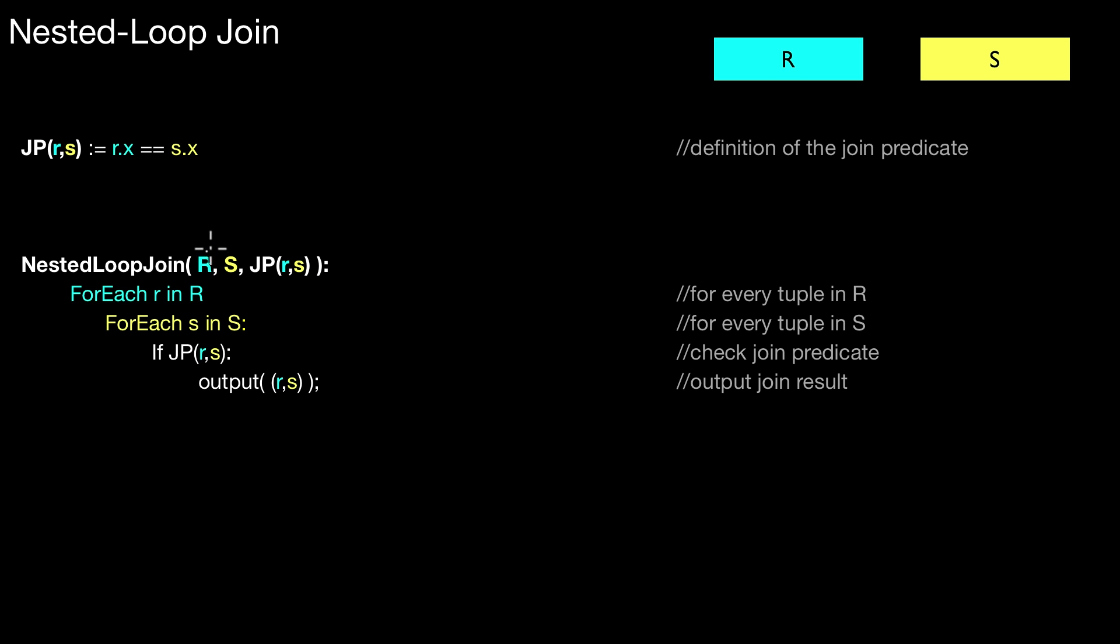Similarly, we don't have to pass R and S materialized as copies in main memory. So there are many ways on how to handle the data. We don't look at that for the moment. The only thing I'm assuming here is that there's some way to somehow iterate over the tuples of R. And in the same way, I can iterate over the tuples of S.